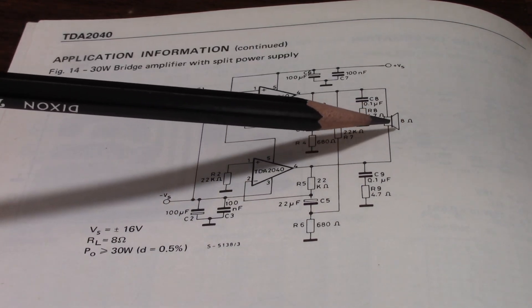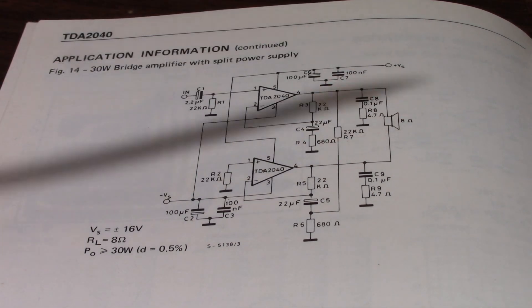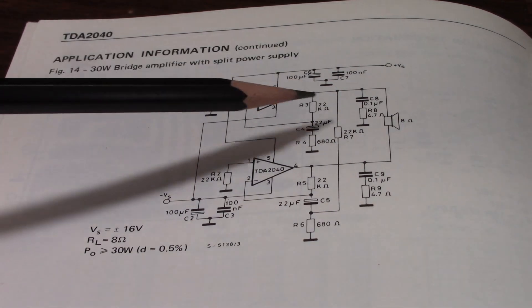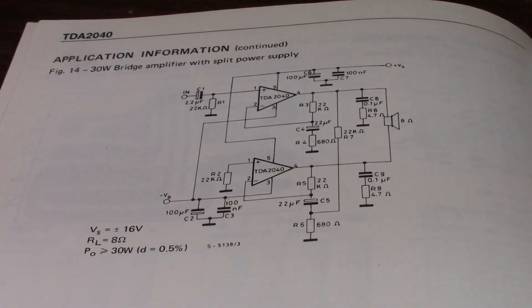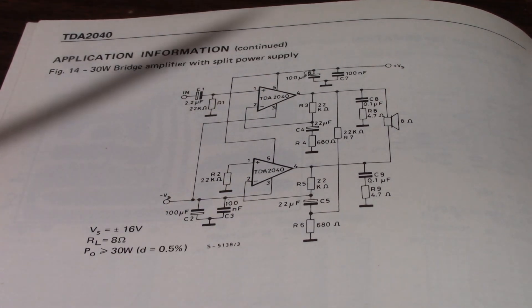Your output voltage swing doubles, and when you double the voltage into the same impedance you also double the current, so you get four times the output power. Well, theoretically - in the real world you don't quite get that much, but essentially with a bridged amplifier you get a lot more power.